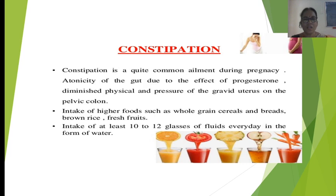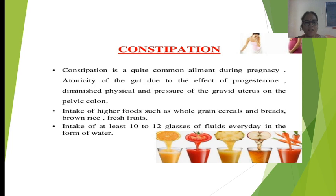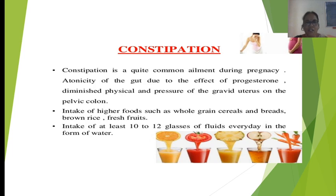Next is constipation, a quite common ailment during pregnancy. It is due to decreased tone of the gut from the effect of progesterone, diminished physical activity, and pressure of the gravid uterus on the pelvic colon. Treatment measures include intake of high-fiber foods like whole grains, cereals, breads, brown rice, and fresh fruits, along with at least 10 to 12 glasses of fluids every day.